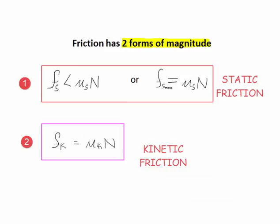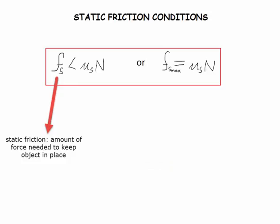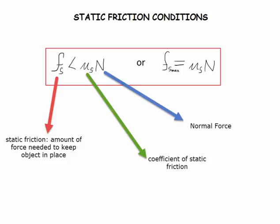The frictional force has two forms of the magnitude, one which is for static friction and the other is for kinetic friction. First, let's define some terms. Static friction is the amount of force needed to keep the object in place. N is the normal force. Mu s is the coefficient of static friction. We'll come back to this later.